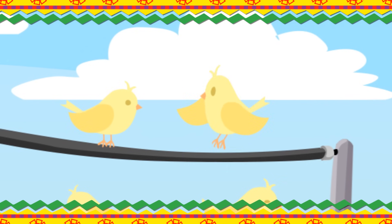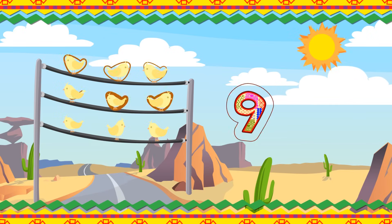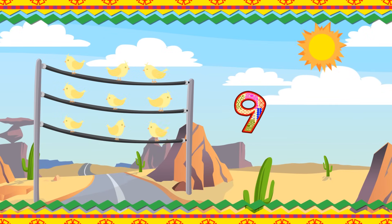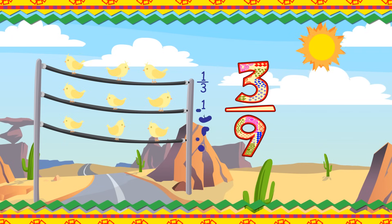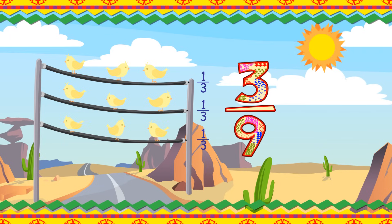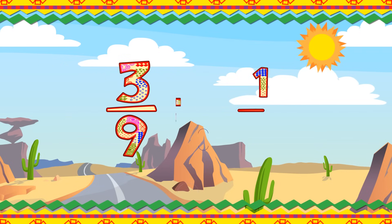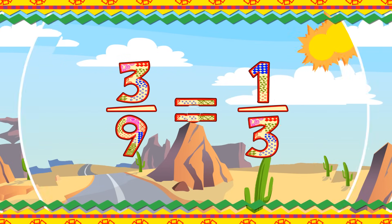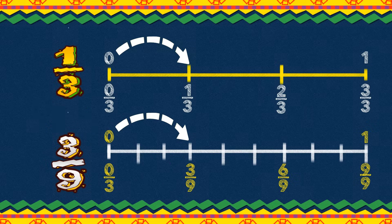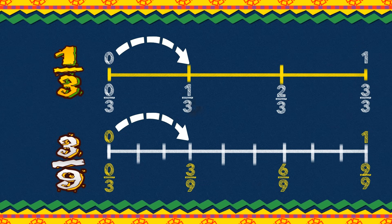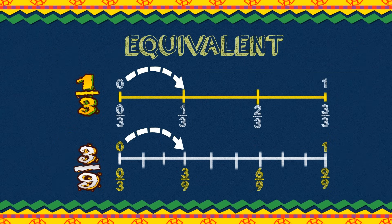Once upon a time, there were nine canaries on telephone wires sitting down in threes. Each wire contained one-third of the birds, so three-ninths is equivalent to one-third. Drawing one-third and three-ninths on a number line shows one-third equals three parts out of nine. Therefore, equivalent is the word that describes three-ninths and one-third.